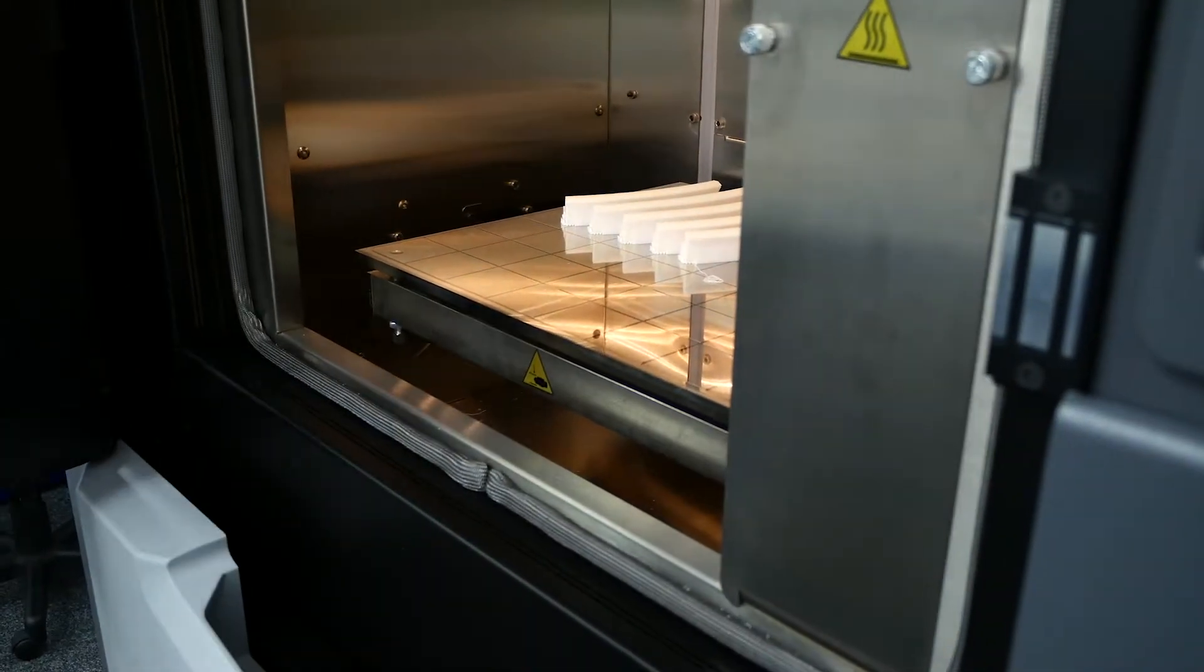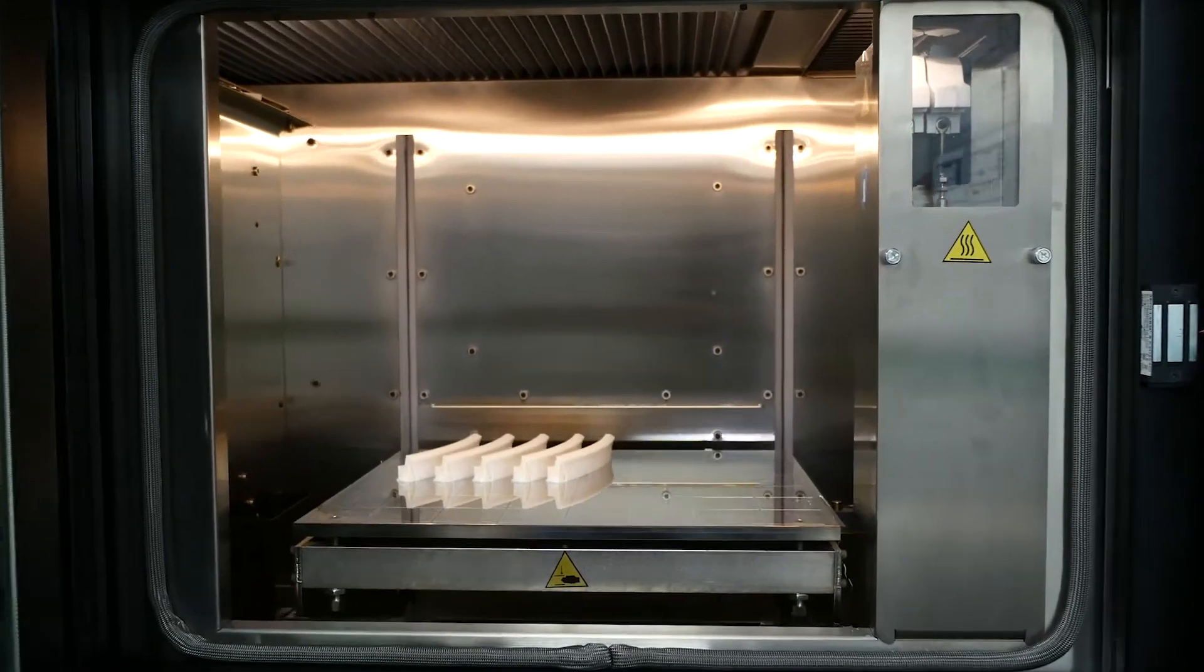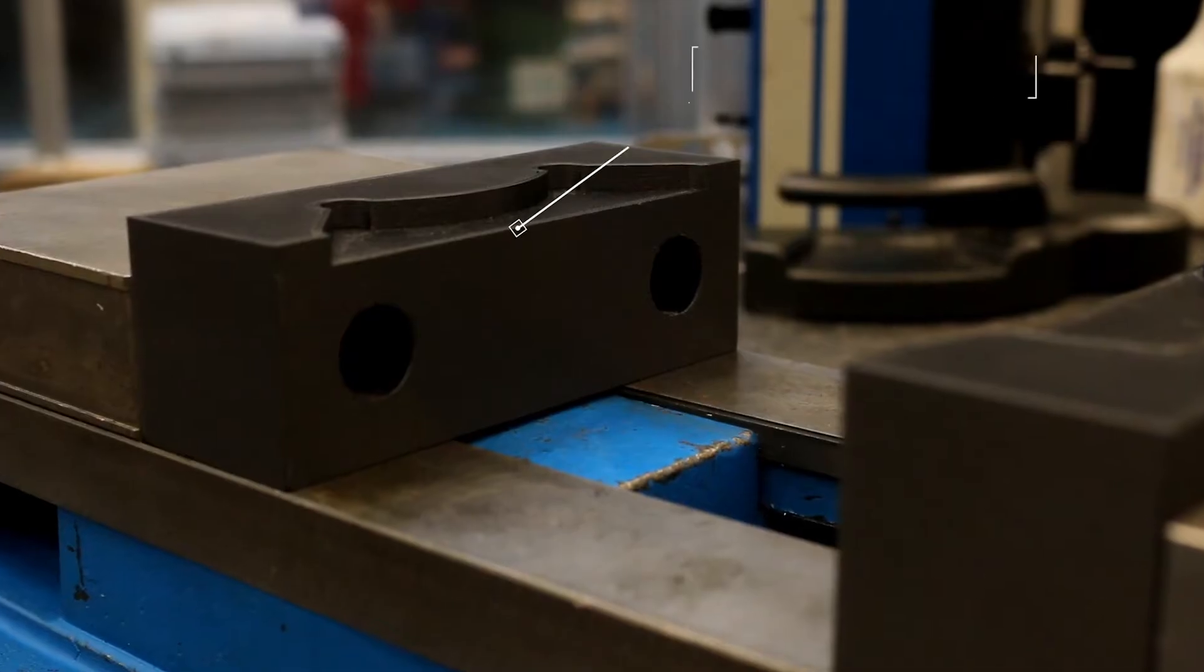We decided to choose SYS as a company to join forces with. We ended up going down the route of the Fortis 450MC. The reason being is we managed to get the hardened head for it and we are looking for strength in our prints. With having the hardened head we can print in the nylon CF materials.